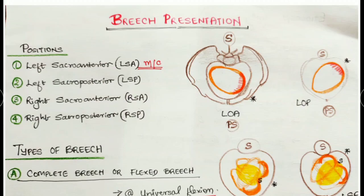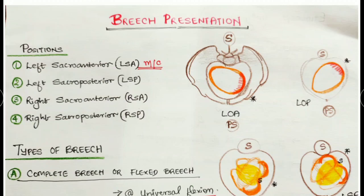Regarding the position — the lie of the baby in the uterine cavity — we can classify it into four positions. The first is Left Sacro-Anterior (LSA), which is the most common. Here we note that the sacrum is chosen as the denominator to describe the position, unlike normal cephalic presentation where the occiput is chosen as the denominator.